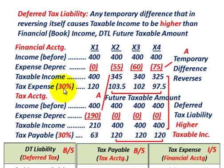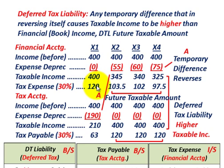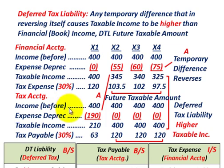To determine tax expense for financial accounting: in year one, we had no reduction in expense, so our total taxable income was $400,000. At 30%, that gives us a tax expense of $120,000. For each of the next three years, we had a reduction in expense, reducing taxable income. Our tax expenses for those years are $103,500, $102,000, and $97,500.